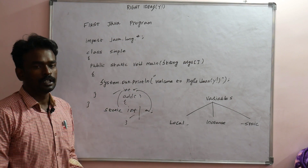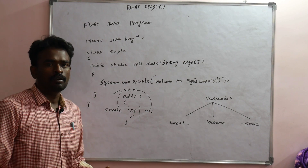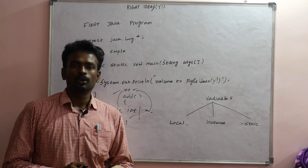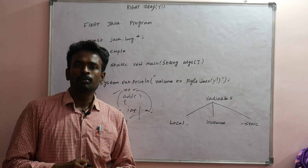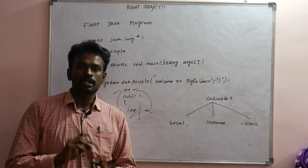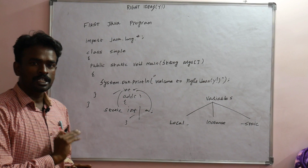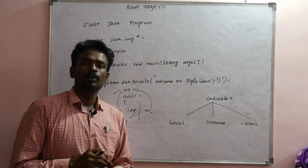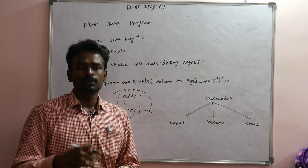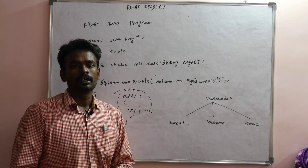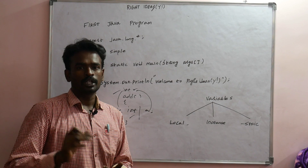If you want to start the program, the static variable's value begins at 0. As the program runs, the value will update. When the program is destroyed or closed, the value resets back to 0. So a static variable is just like a constant, but its value can change during execution. In Java, there is also a 'final' keyword that can be used with methods, classes, and variables.